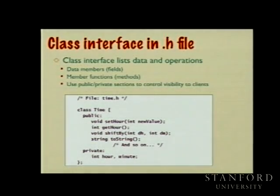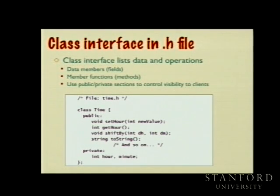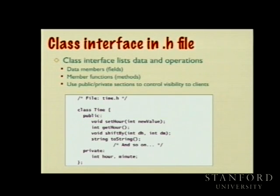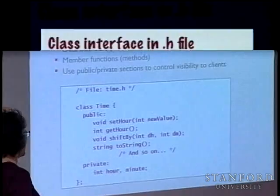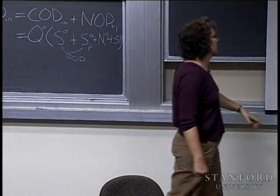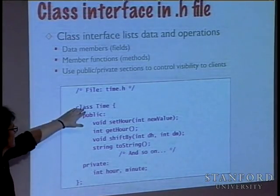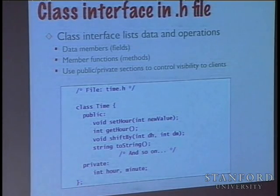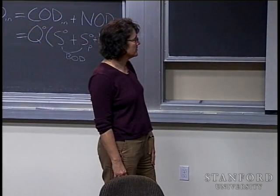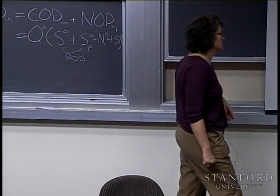Let's look at a simple class: creating a 'time' — a moment in time like 2:15, as you might use in a calendaring program. In the .h file, the interface, we declare 'class Time' with opening and closing curly braces and a closing semicolon. This mirrors the syntax C++ uses for structs. That semicolon is not present in Java and is easy to forget, generating confusing compiler errors, so be attentive.